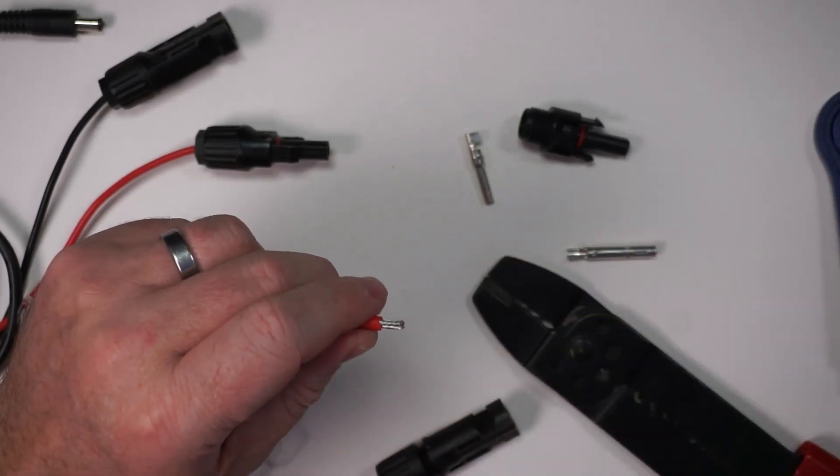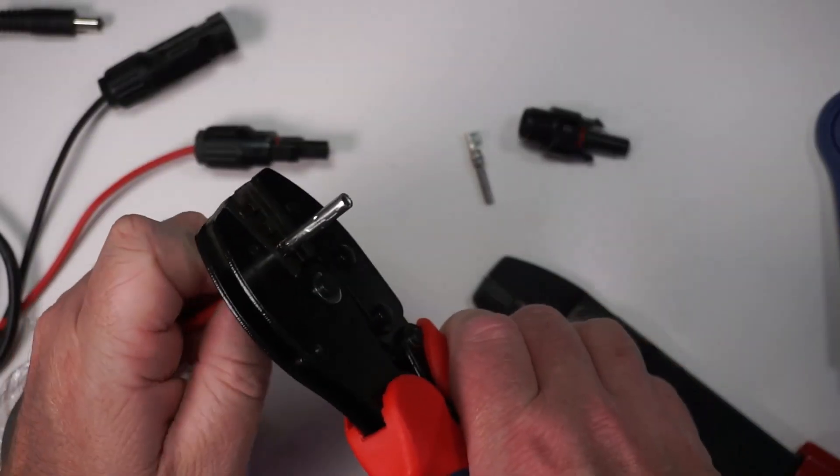I'm going to use the six millimeter setting. We'll do 12 gauge. We'll do it just a bit here. Twist this a bit to keep all the wires together. And we'll put this in here. Get it started. I don't know if I can get the insulation in. Let's crimp down.